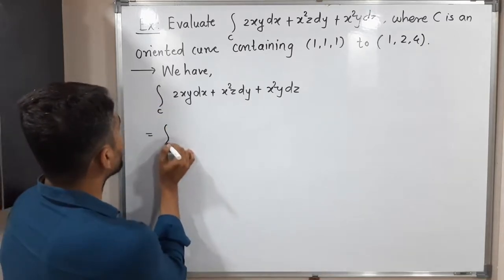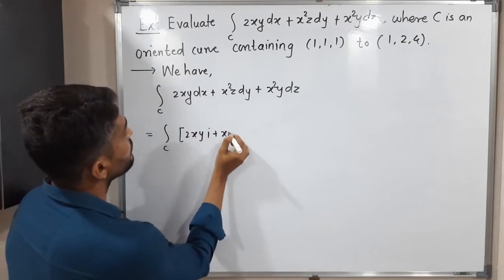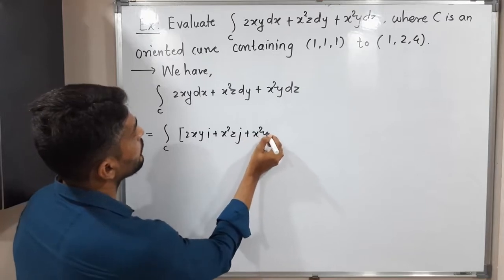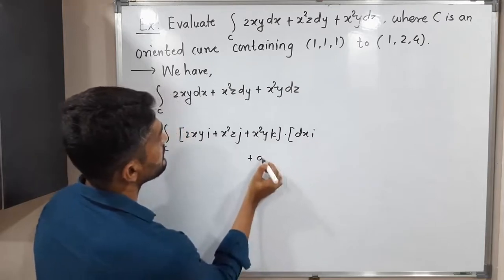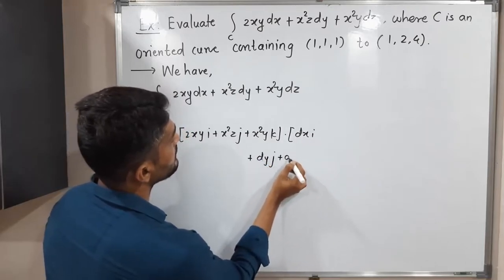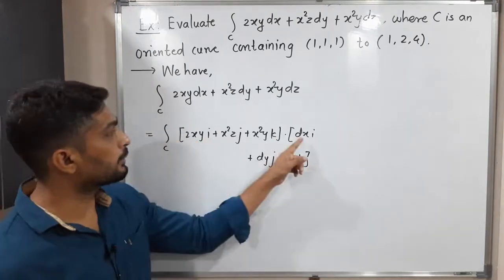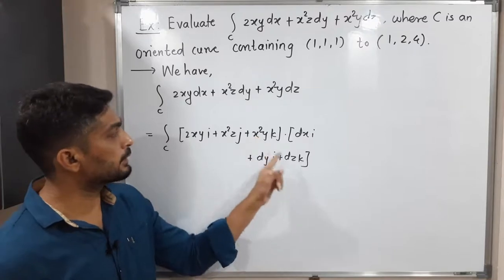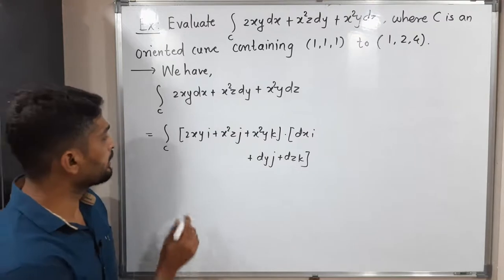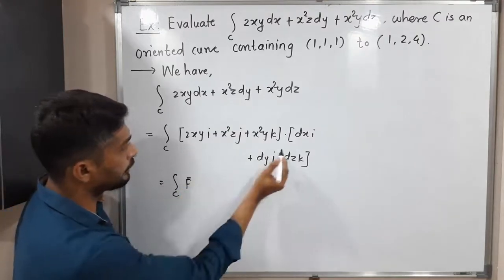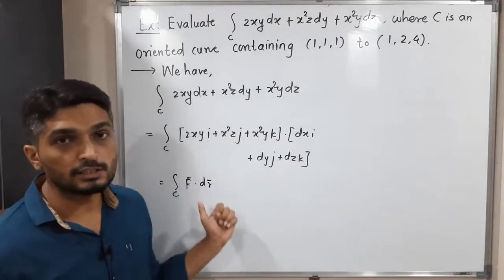Yes, I have written that thing also, but we will try to express it in a standard form. That means we will try to express as a dot product of two vector valued functions. So the same thing we can write in this way: integration over C, 2xy i plus x²z j plus x²y k dot product with dx i plus dy j plus dz k. So you know well how to take a dot product: multiple of i into multiple of i plus multiple of j into multiple of j plus multiple of k into multiple of k. So we'll have this integral again. The first bracket is nothing but F bar, and that is nothing but our dr bar. So the same integral we have expressed in this way.